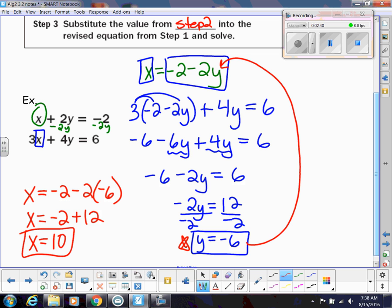So my final solution would be 10 comma negative 6. Remember, in a solution, we have two lines, a system of equations, linear equations. The two lines would intersect at that point, 10 negative 6.